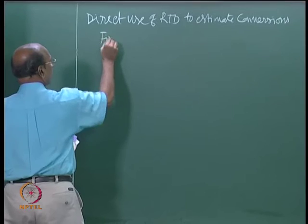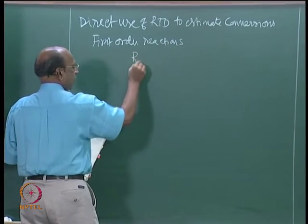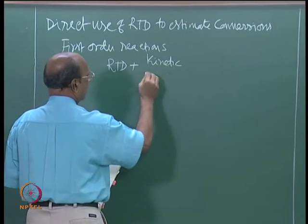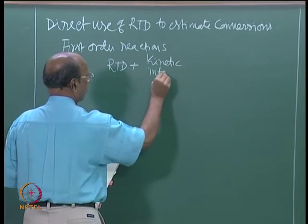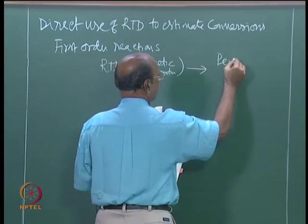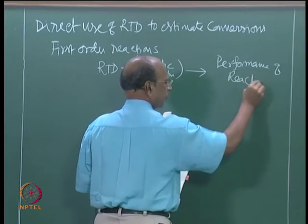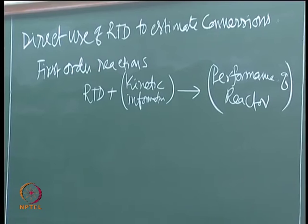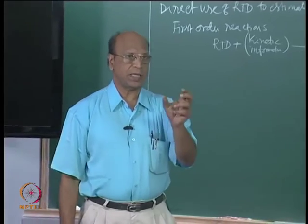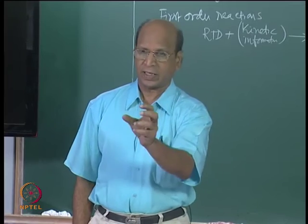For first-order reactions, RTD plus kinetic information gives the performance of the reactor. This is only for first-order reactions. What is happening is that RTD gives me the fraction coming out between time t and t + Δt, and for that fraction, I know how much time it has spent inside the reactor. At the exit, I can find the conversion in that particular fraction.